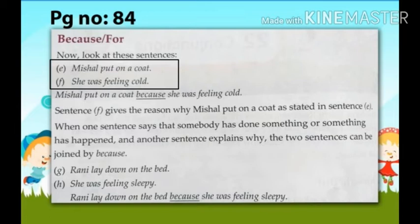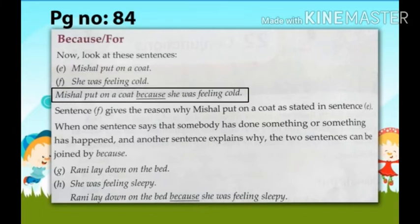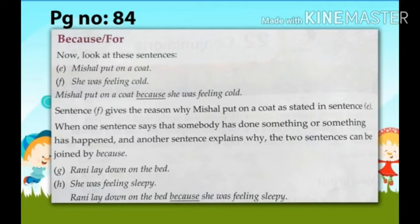So whenever one sentence says that something has happened and another sentence explains the reason, we can join such sentences by using 'because'. As written here: 'Michelle put on a coat because she was feeling cold.' Sentence F gives the reason why Michelle put on a coat as stated in sentence E. That's why these two sentences are joined by using 'because'.